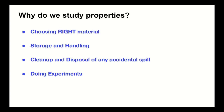So why do people study properties? It can help you choose the right material. So if you are looking to build something that conducts electricity, you would choose copper instead of carbon. It also tells people how to store or handle things. You don't put two things that react with each other next to each other. If there is an accidental spill, it helps people know how to take care of it. And also for doing any kind of experiments to explore the world around us, we need to know what are some properties of these things.